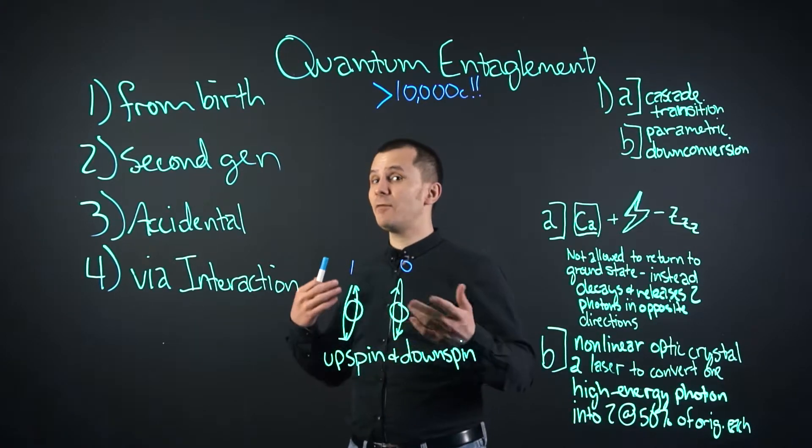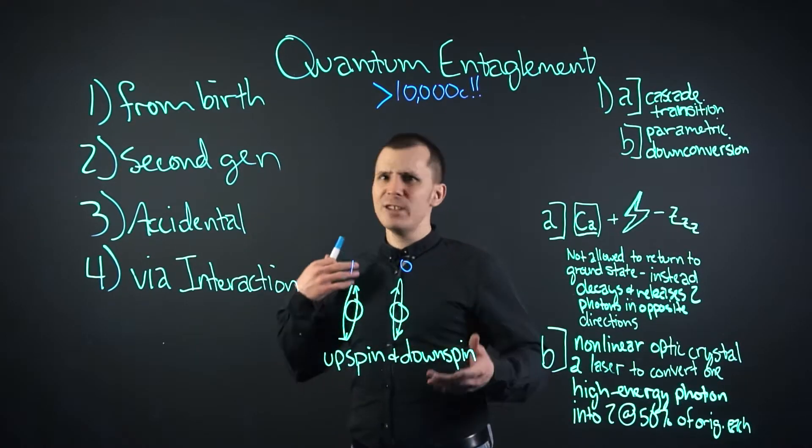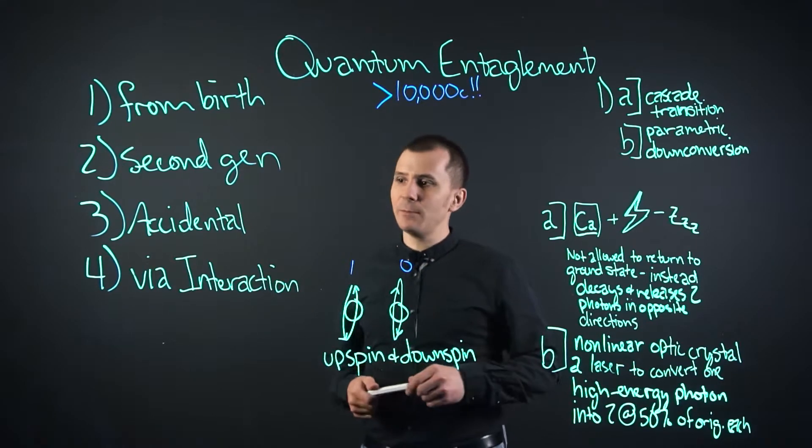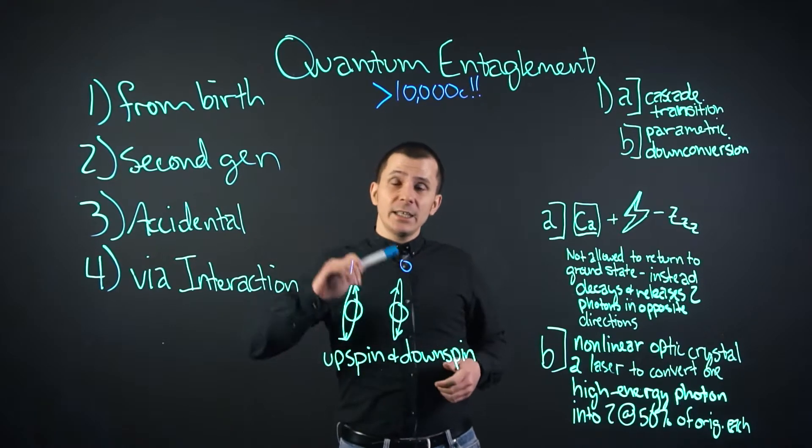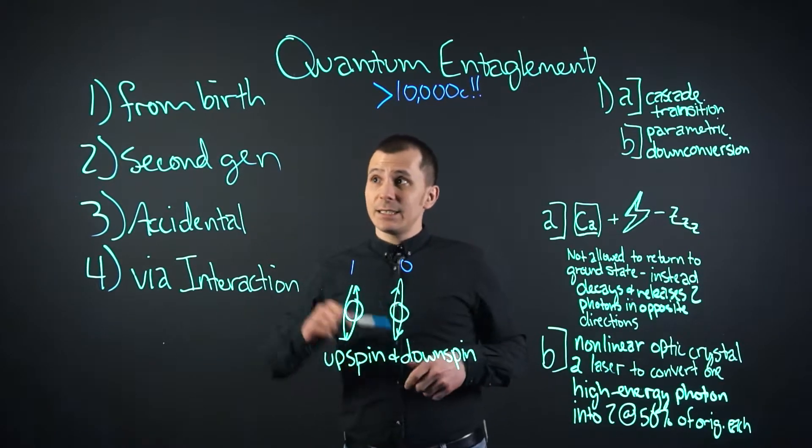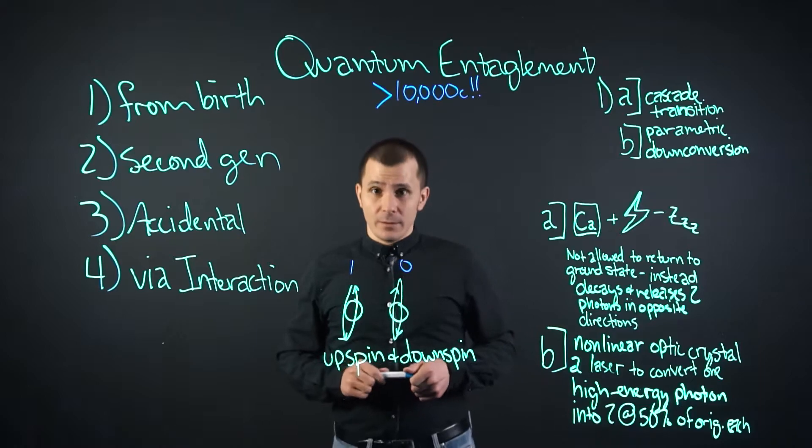Trying to catch a fly in the house with an oven mitt is a little difficult. So that's how you get second generation. Second generation is best and easiest to get from birth entanglement.